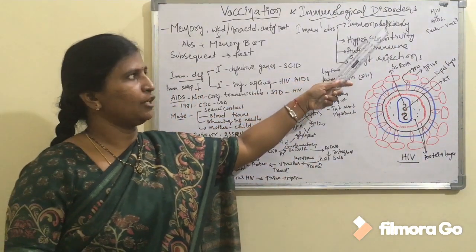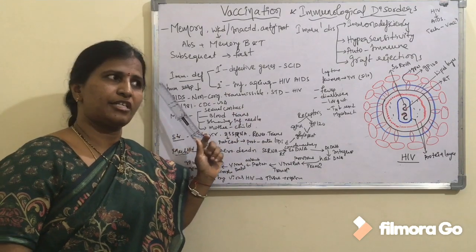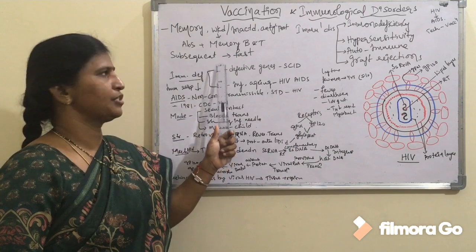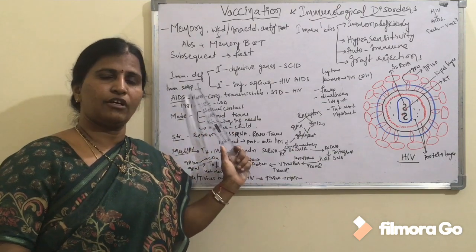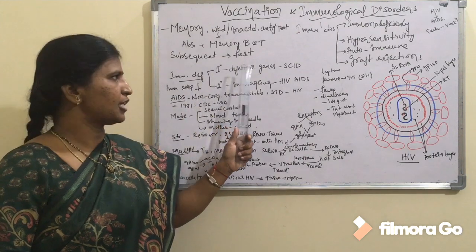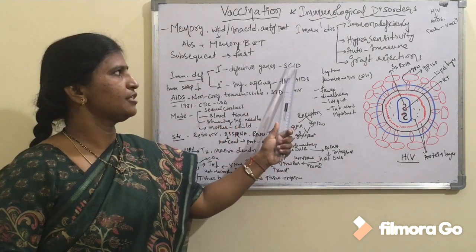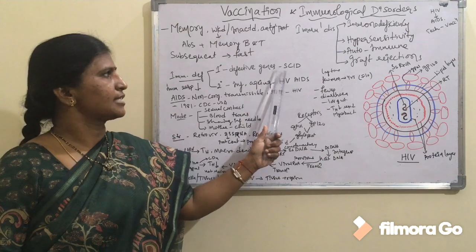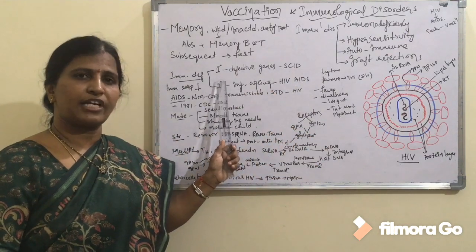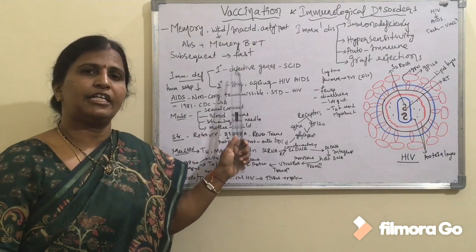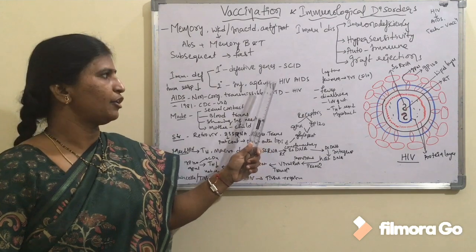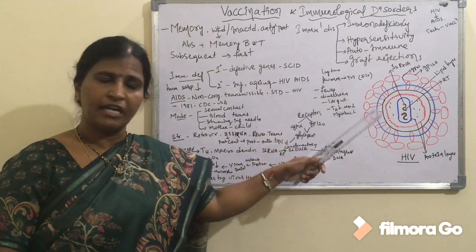Coming to the first category, immunodeficiency disorders: these result due to a decrease in immunological response and can be categorized into two types — primary and secondary. Primary immunological disorders result due to defective genes; a best example is SCID, or Severe Combined Immunodeficiency Disorder. Secondary immunological disorders result due to infection; a best example is Human Immunodeficiency Virus, or AIDS.